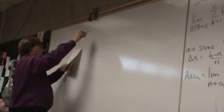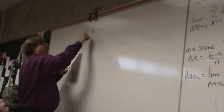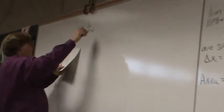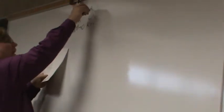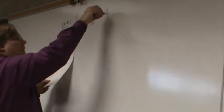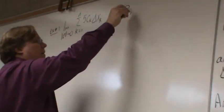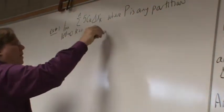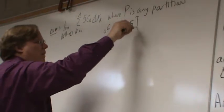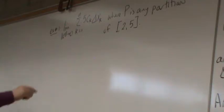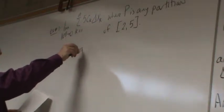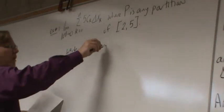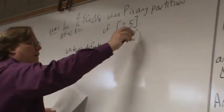Example one: suppose you've got a Riemann sum that looks like this — the limit as the magnitude of the largest partition goes to zero of the sum as k goes from 1 to M of 5 C sub k delta x sub k, where P is any partition of the closed interval from 2 to 5. Write this as a definite integral in Leibniz notation.